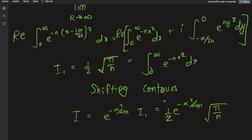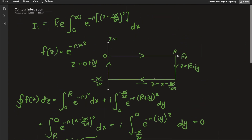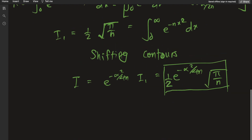I hope you enjoyed this video and thoroughly understood this wholesome process of contour integration. The only reason I took the contour to be a rectangle with breadth alpha over 2n was because of this i alpha over 2n factor. Usually we take a semicircular contour, which works excellently with Jordan's lemma, the estimation lemma, and various other tools.